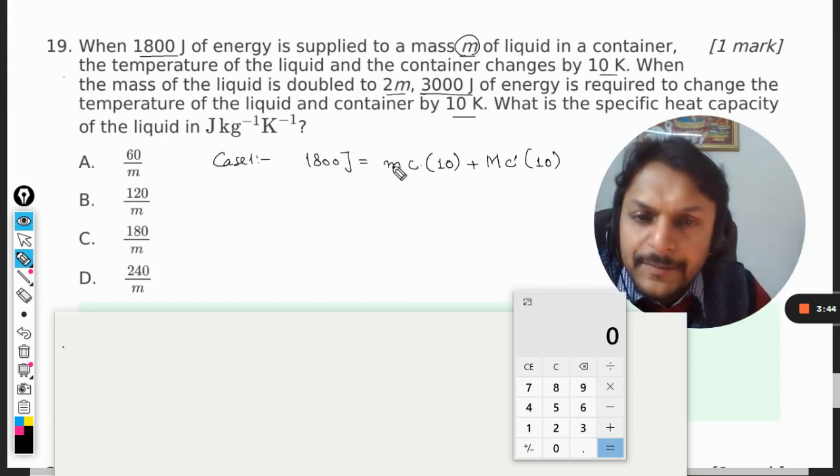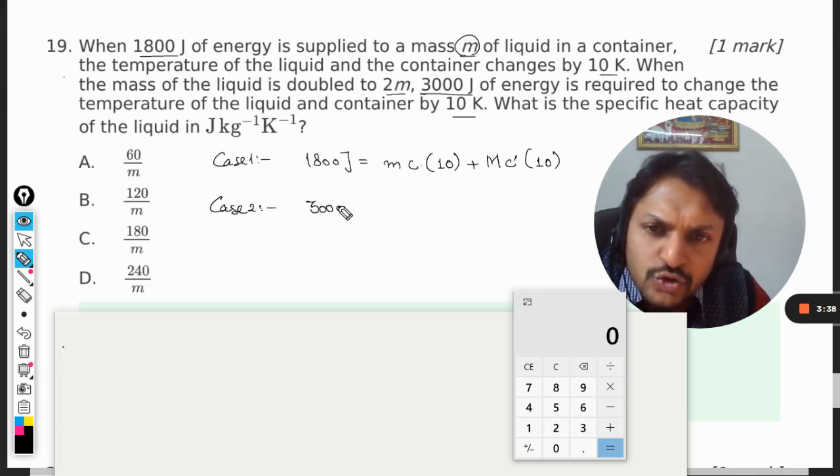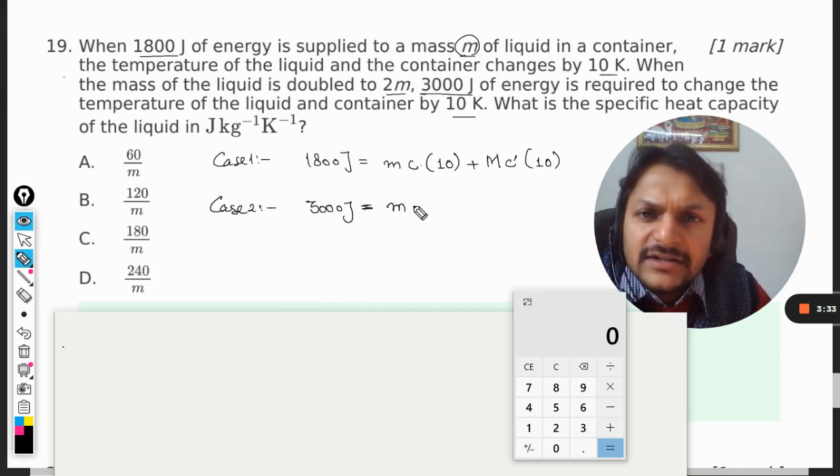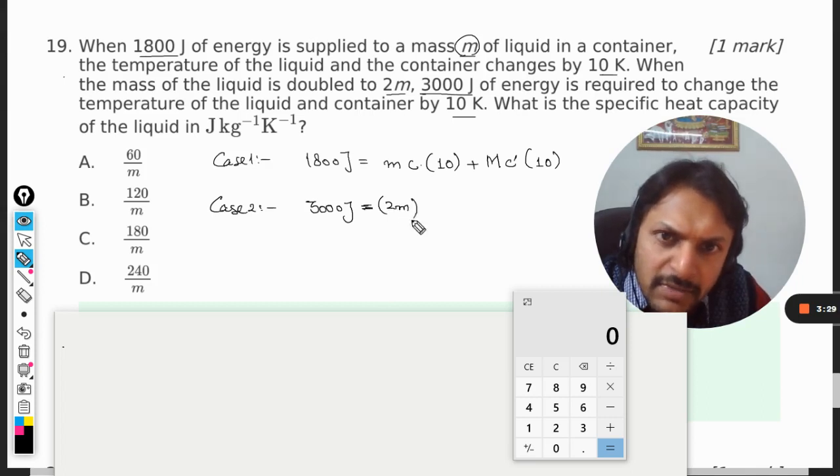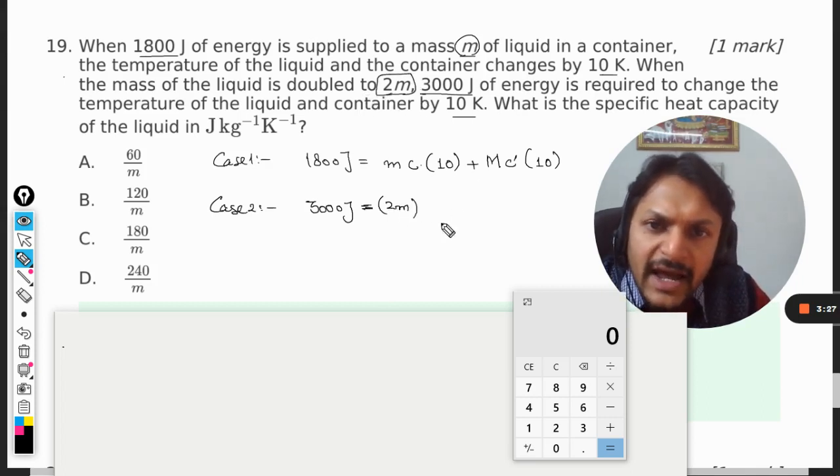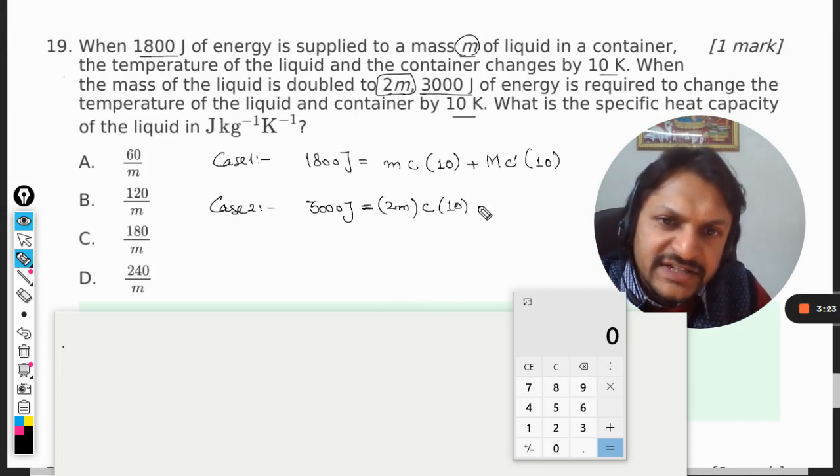Now we go for case number two. Now 3000 joules of energy is given. M is the mass—sorry, 2m is the mass now, because the mass is increased. 2m, and specific heat will remain the same. The temperature still changes by 10.